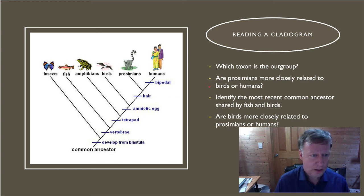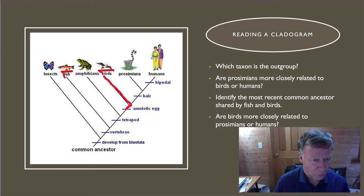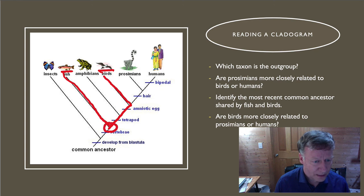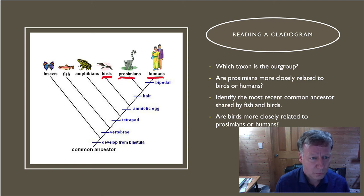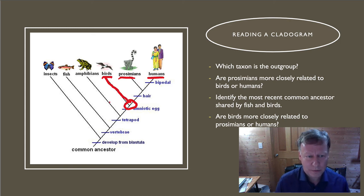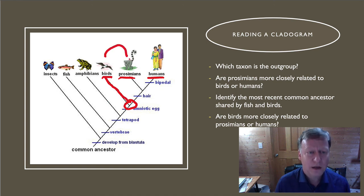Third, identify the most recent common ancestor shared by fish and birds. Following birds back through time and fish back through time, they meet at a common ancestor at that point. Finally, are birds more closely related to prosimians or to humans? Here's our birds — when we trace back in time, we reach a node that is the common ancestor for both prosimians and humans. That means birds are equally related to prosimians and humans. The fact that birds and prosimians appear closer together means nothing, because remember, our node can rotate. We could have put humans and prosimians in different spots and it wouldn't have changed the cladogram.